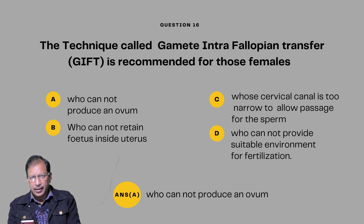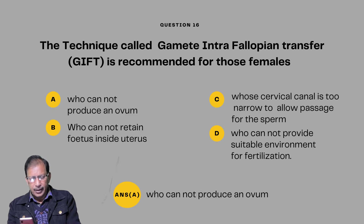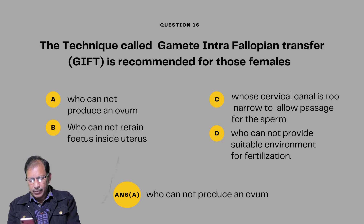Question number fifteen: The technique called Gamete Intrafallopian Transfer, GIFT, is recommended for those females — A: who can produce an ovum but cannot retain the fetus; B: who cannot retain the fetus inside the uterus; C: whose cervical canal is too narrow to allow passage for sperm; D: who cannot provide suitable environment for fertilization. Answer will be A — who cannot produce an ovum.